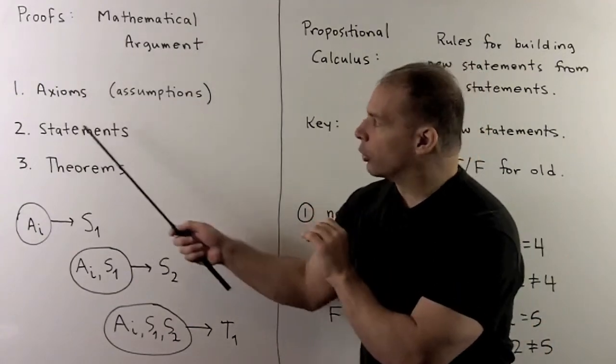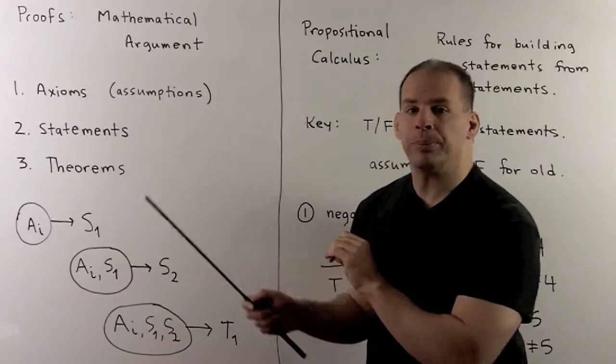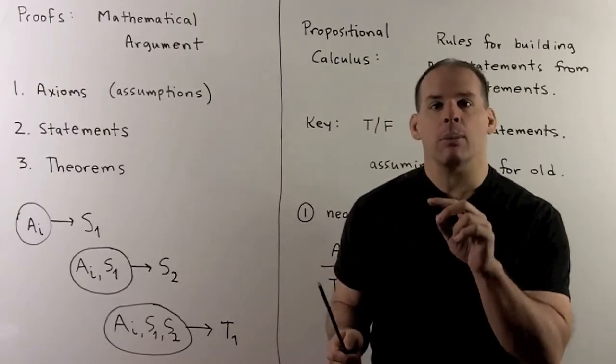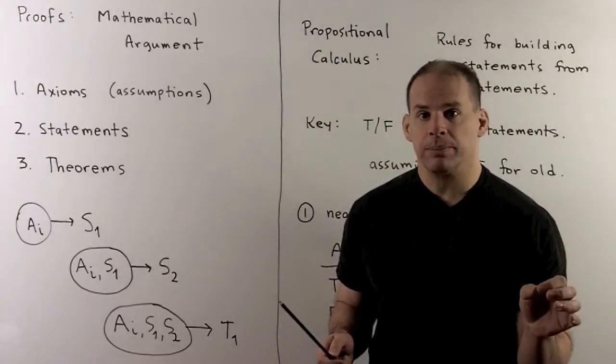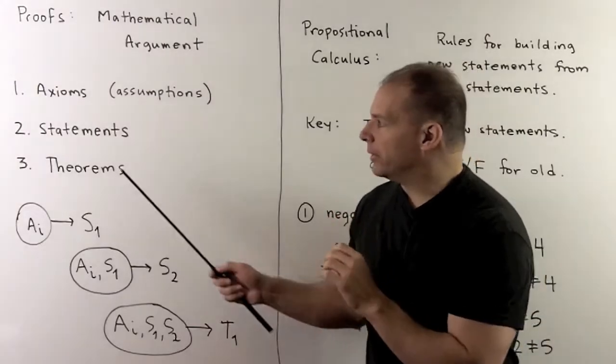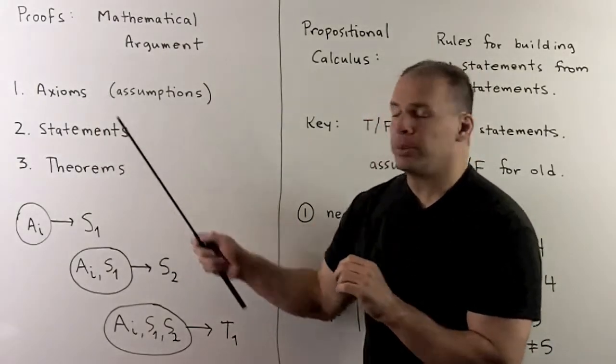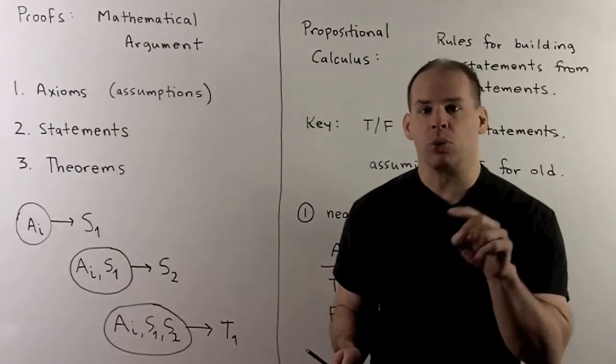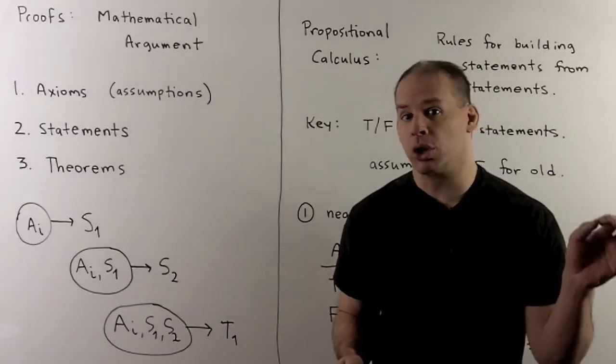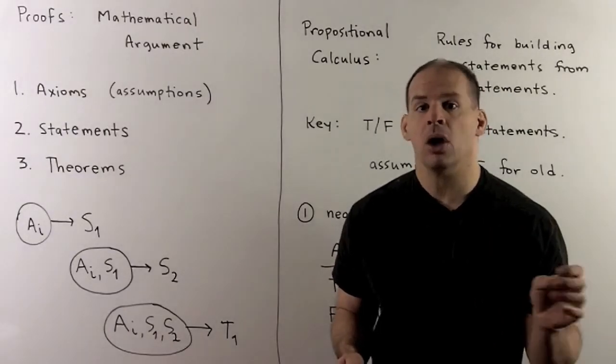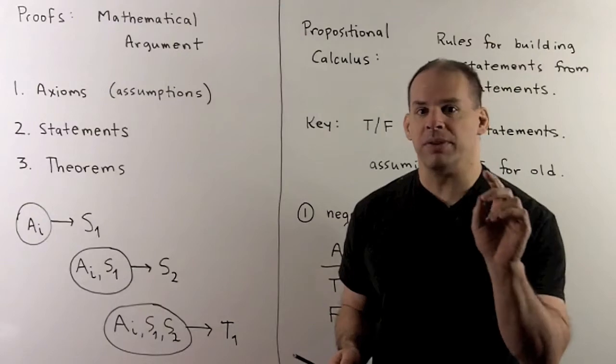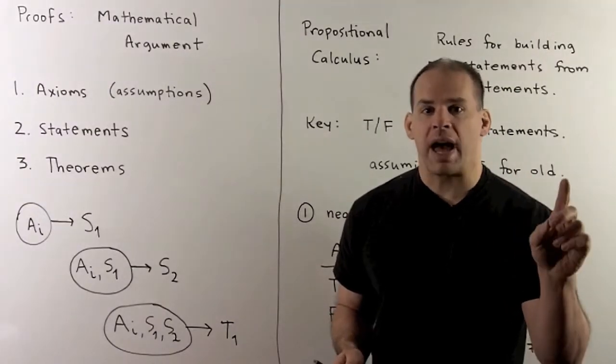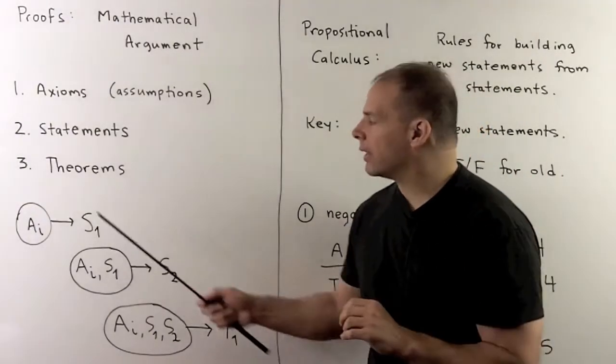To these axioms, we're going to apply the rules of logic. From that, we'll get more mathematical statements. Then, if we put these new statements with the axioms, we can continue applying the rules of logic to derive more statements. When we get to a statement that we feel is important enough, we'll stop and we'll call the final statement a theorem.